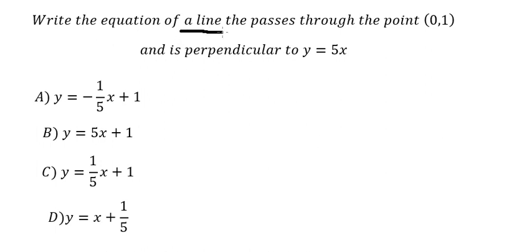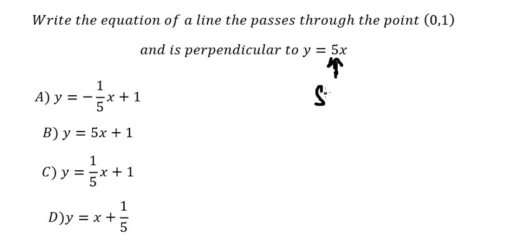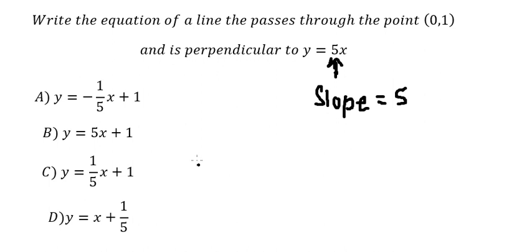We know that this line is perpendicular to y equals 5x. So we know that the slope of this one is about number five, but this is about perpendicular so we have k number one.